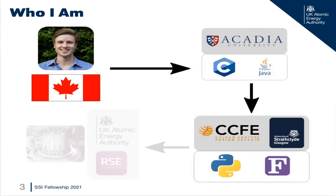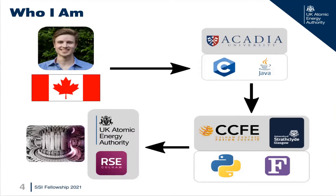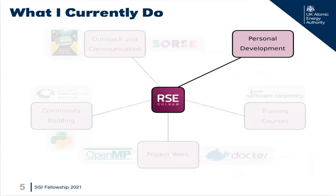It became my primary concern to try to improve any research software that I touched. To focus on this task full-time, I moved into a research software engineer role in the central RSE team at the UK Atomic Energy Authority. The RSE role has afforded me time to consistently develop my software engineering skills like testing, documentation, and requirements collection, and I passed this information along to researchers at the lab.